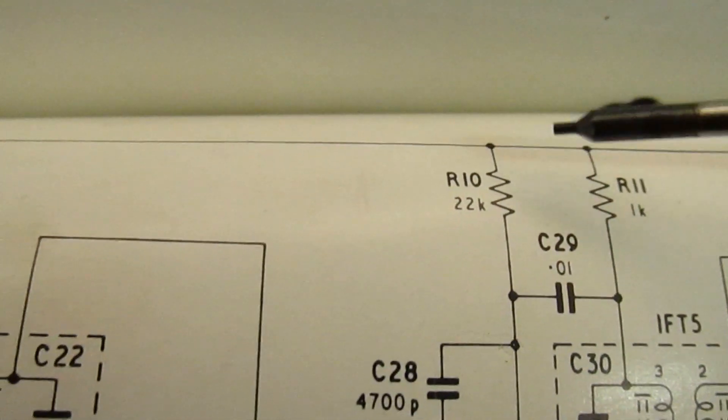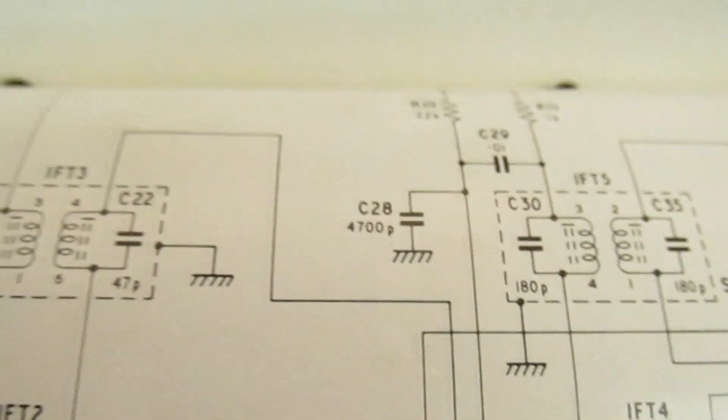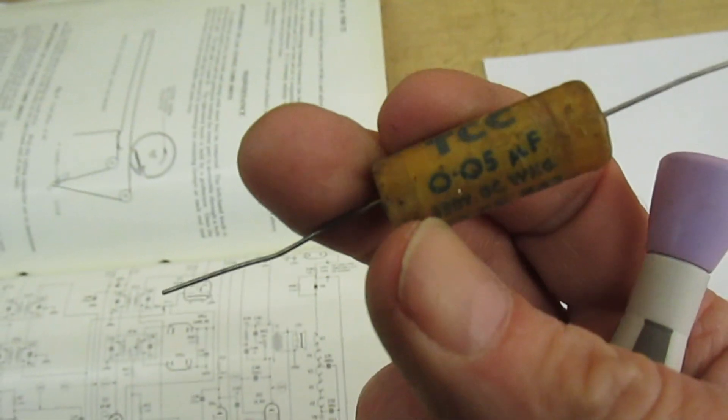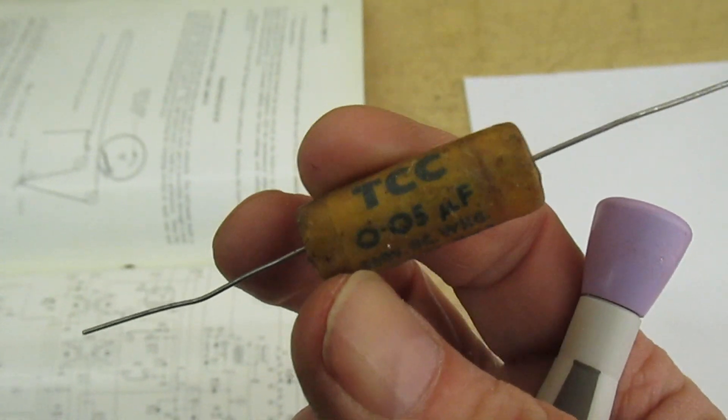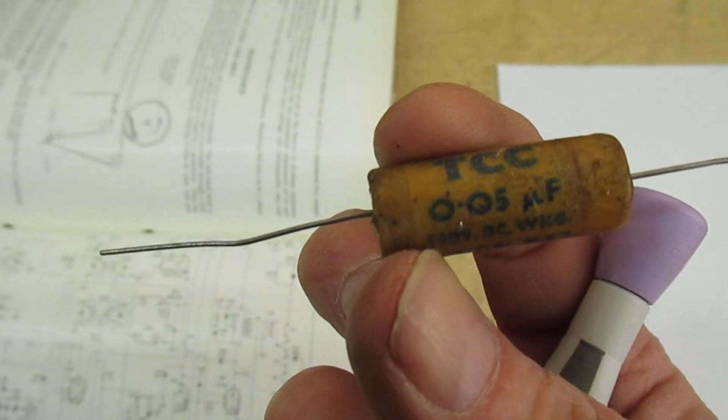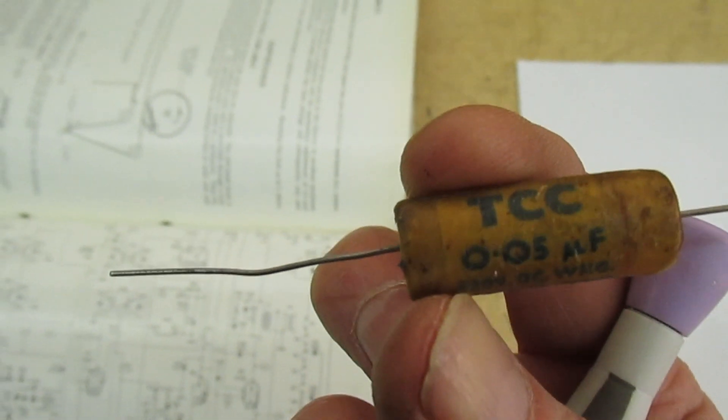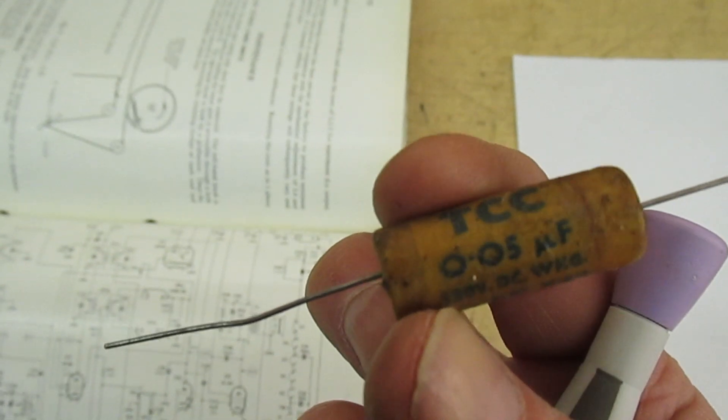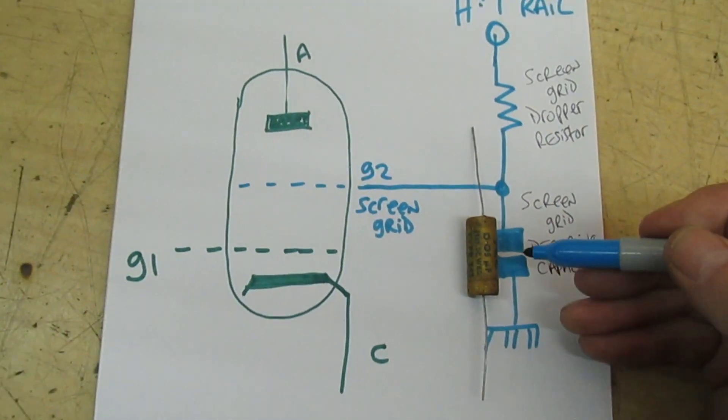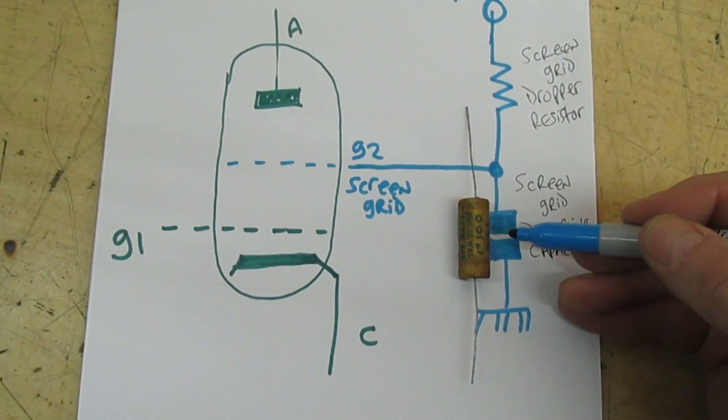In a lot of valve radios, the screen grid decoupling capacitor is actually a wax paper capacitor. Let's explain the importance of that now and why these wax paper capacitors you must change all of them regardless.